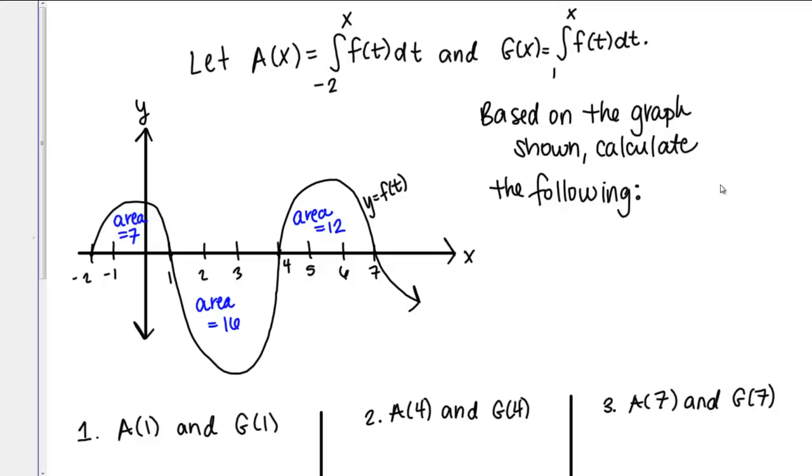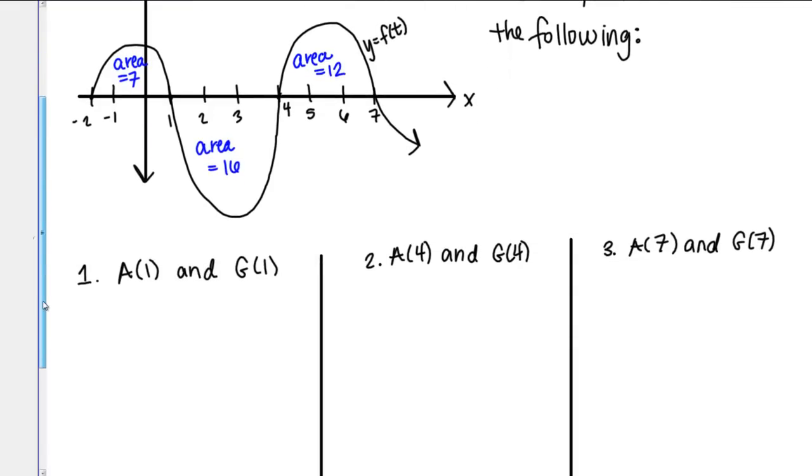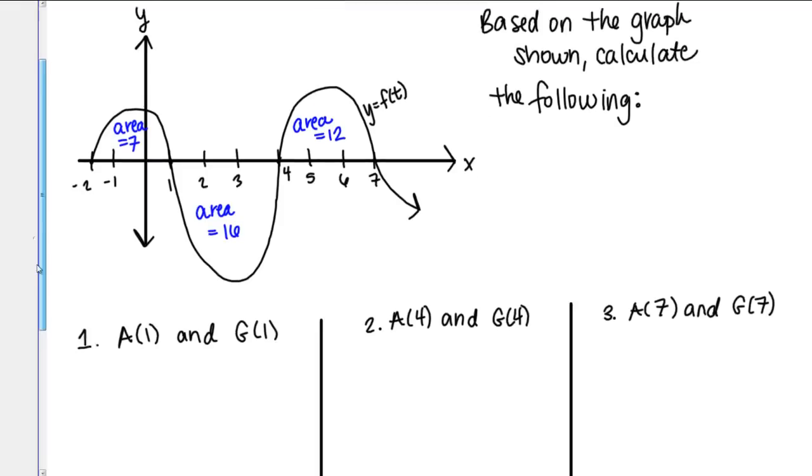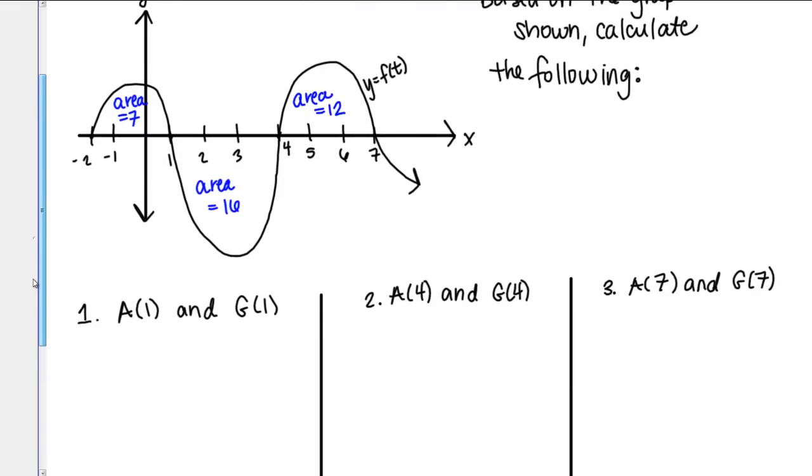Then the instructions are, based on the graph shown, calculate the following. Then we have six things that we want to calculate here. Let's start with number 1. In number 1, we're supposed to calculate A of 1 and G of 1.